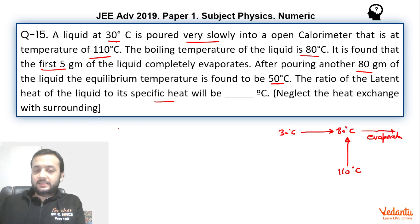So for the first 5 grams we can say this comes to 80 degrees celsius and hence how much heat would have been accepted: m into s into delta t. Delta t is 80 minus 30 which is 50 degrees celsius. Here s is the specific heat capacity of the liquid. So this is the heat it has accepted while coming from 30 to 80.